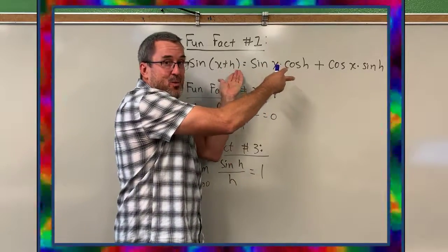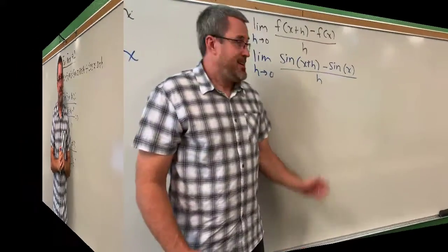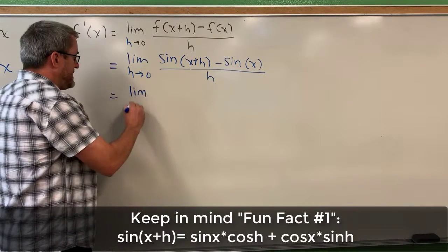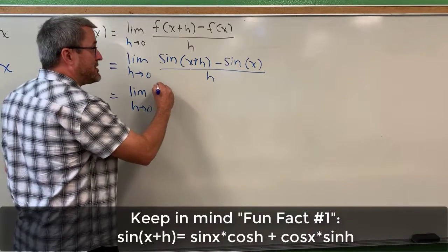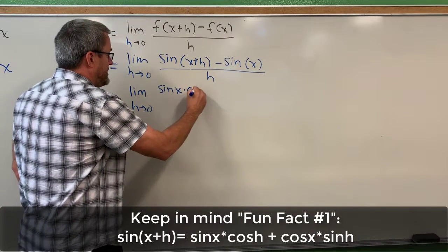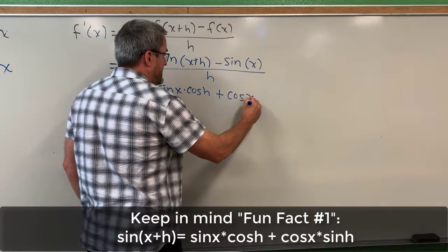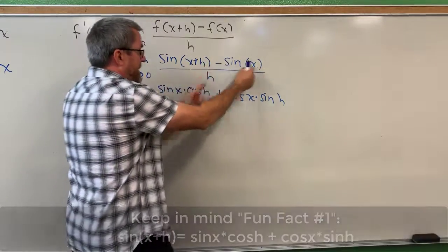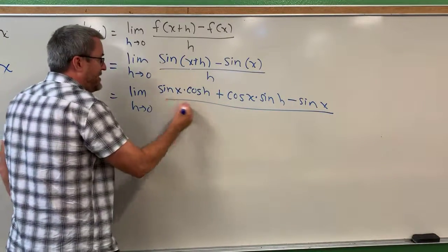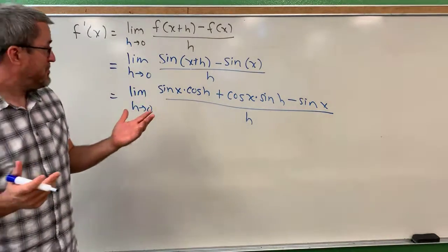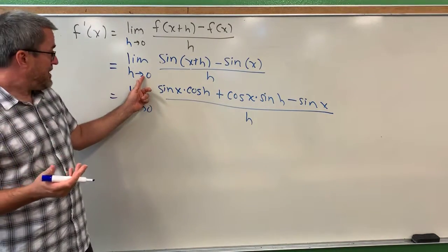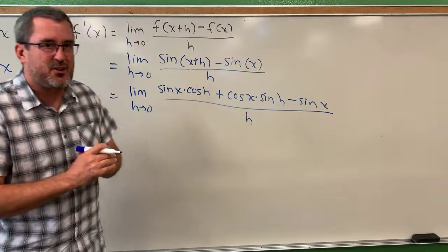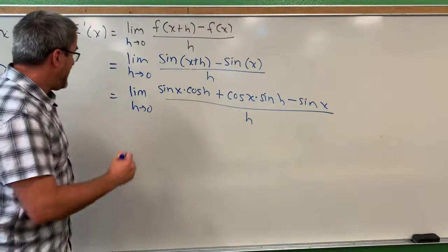Taking fun fact number one back to our justification: the sine of x plus h is equivalent to sine of x times cosine of h, plus cosine of x times sine of h. We still have minus sine of x, and we divide all of that by h. Keep in mind that we are eventually going to think about h going to zero, but we can't yet, because if h is really small we're dividing by something really small. So we need more algebraic manipulations to evaluate this limit.